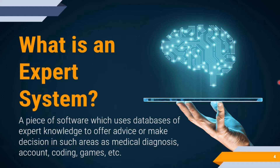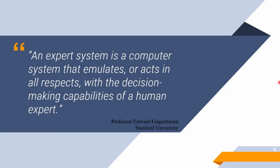You have seen examples where software gives expert advice. If you don't have access to an expert, you can still interact with that system. For example, if a doctor is not available, you can use software or a machine to get advice. An expert system is a computer system that emulates or acts in all respects with the decision-making capabilities of human experts.